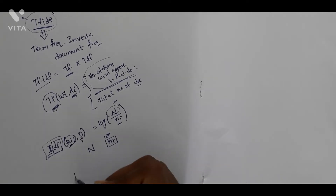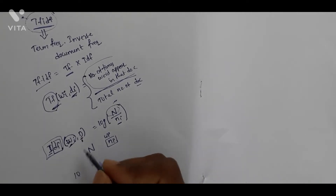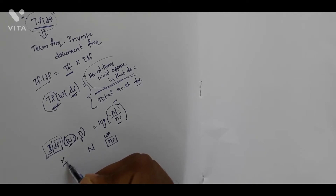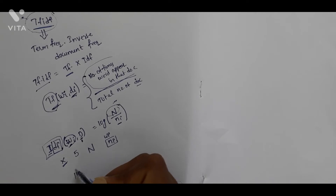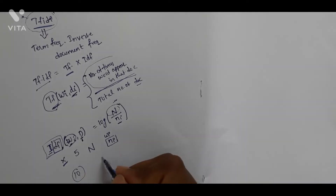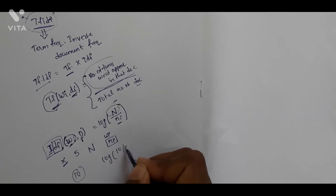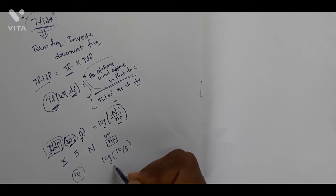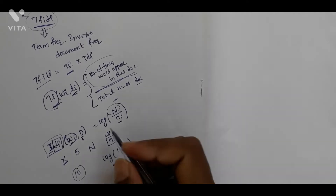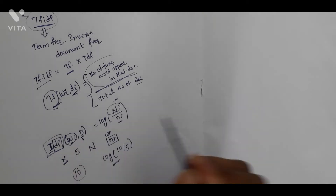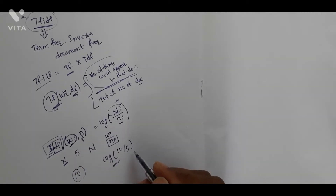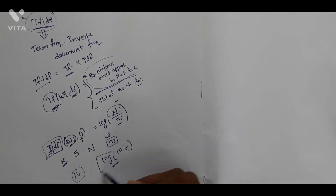For example, suppose we have 10 documents and we search for the word x, and x appears in 5 out of 10 documents. We use inverse document frequency: logarithm of 10 divided by 5. This is how we use TF-IDF.